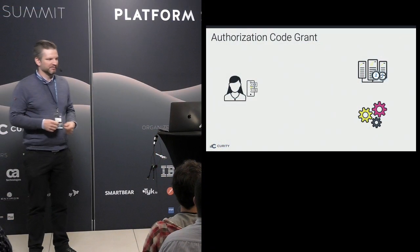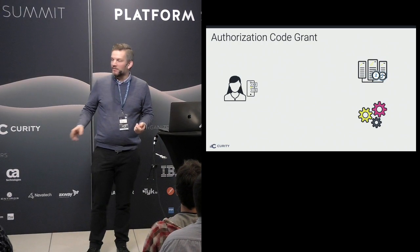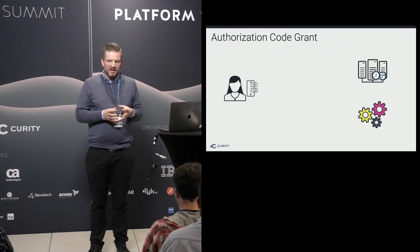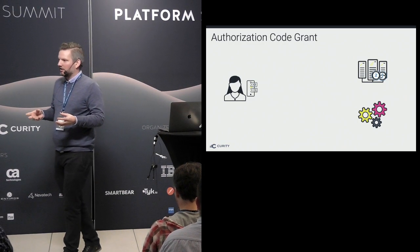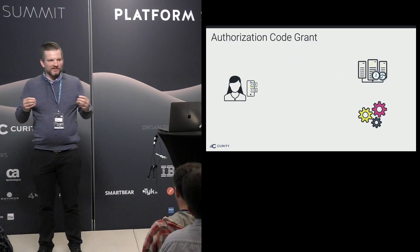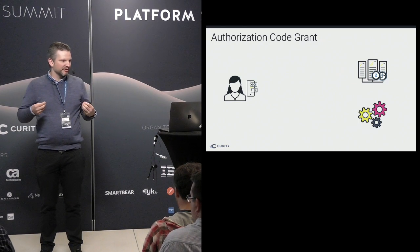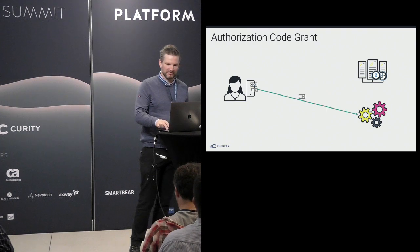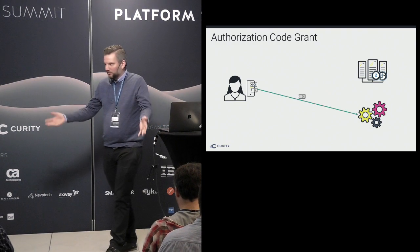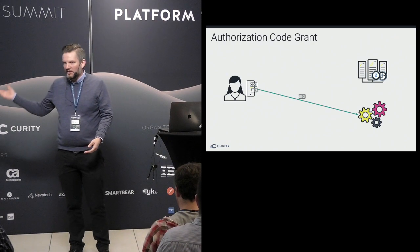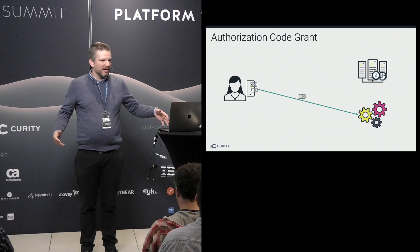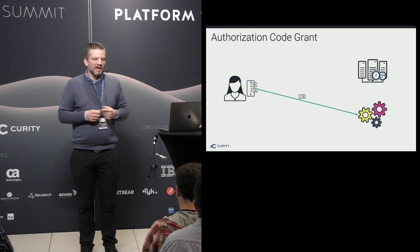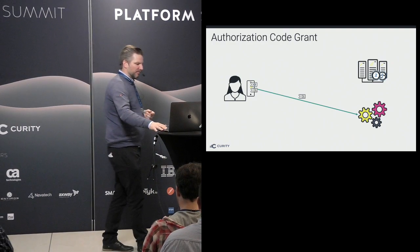The access token, however, is for the API. In this case it's a random string that does not contain any data, so the client can't read it or get any information out of it — but it knows it can use it to get data from an API. To get that data, we make an API call together with the access token. The API can then make its authorization decision, see that there's a token, verify it's valid, and return the data.